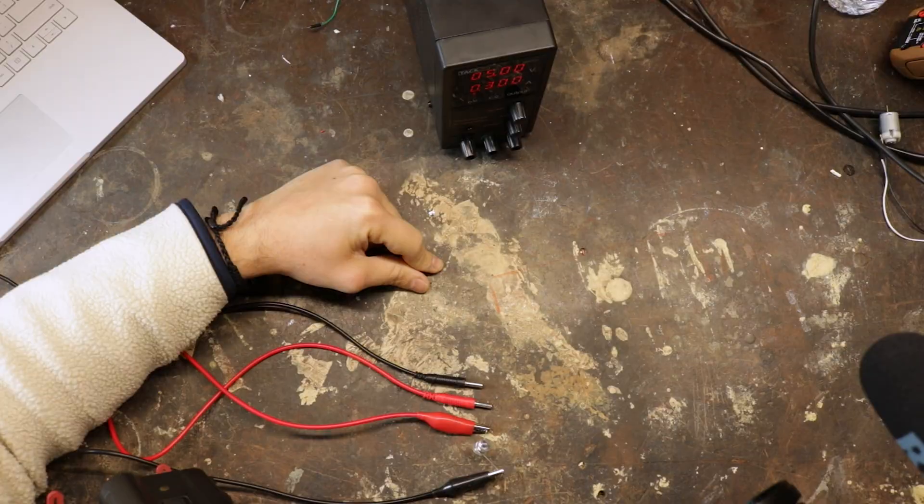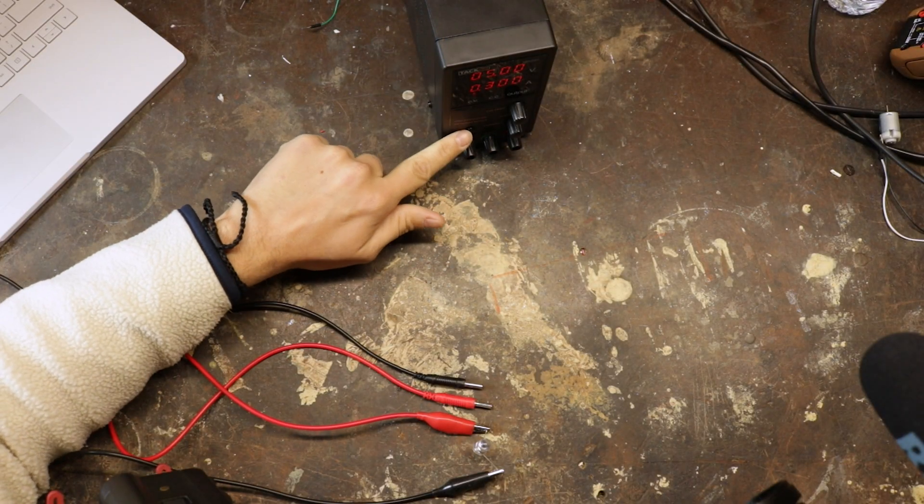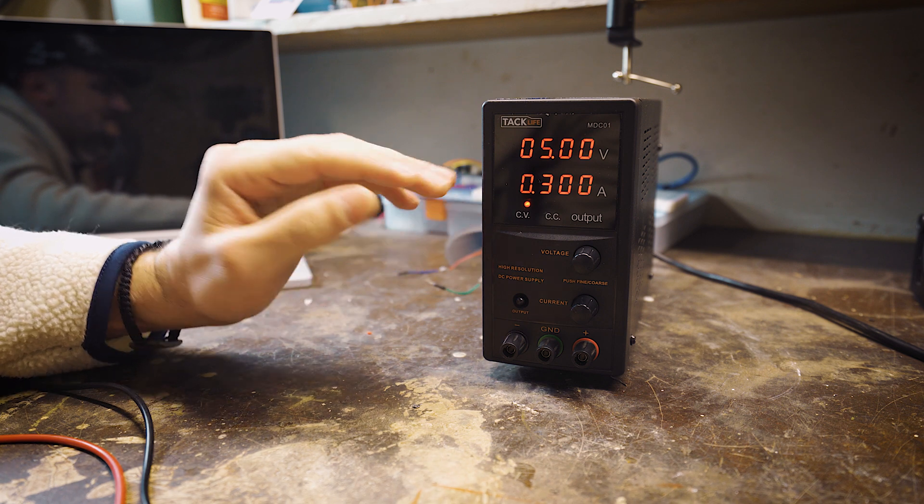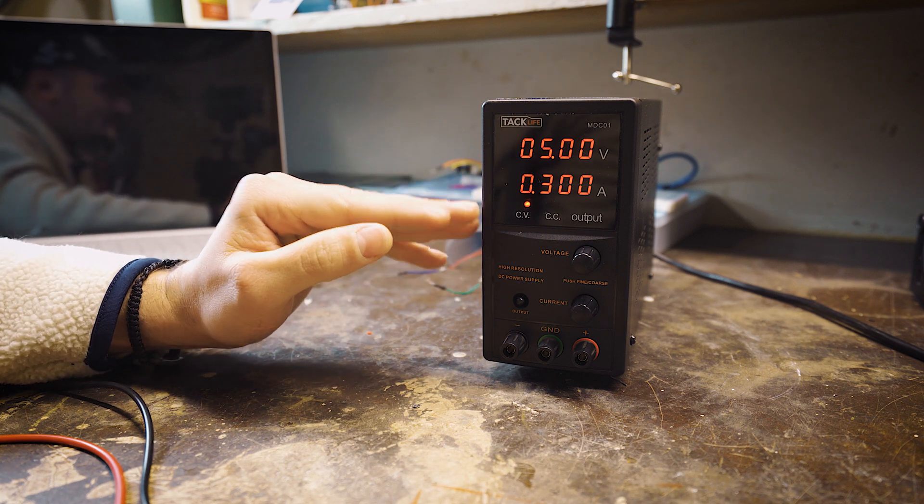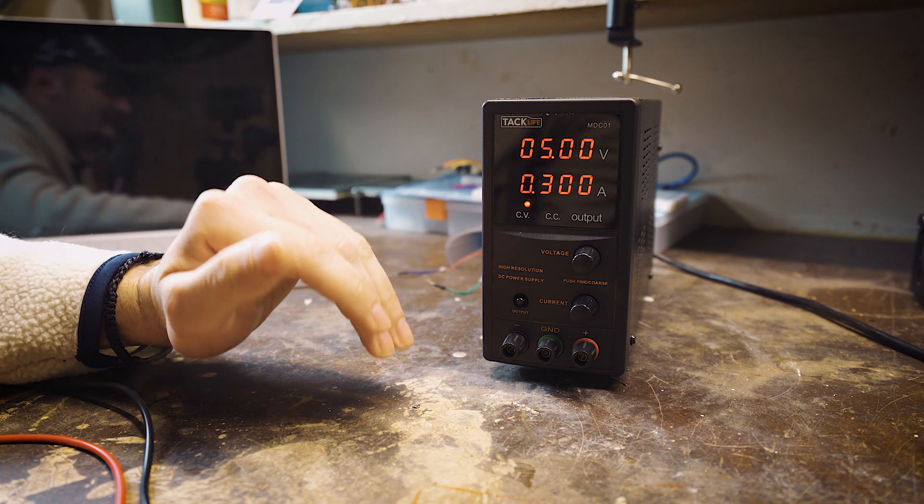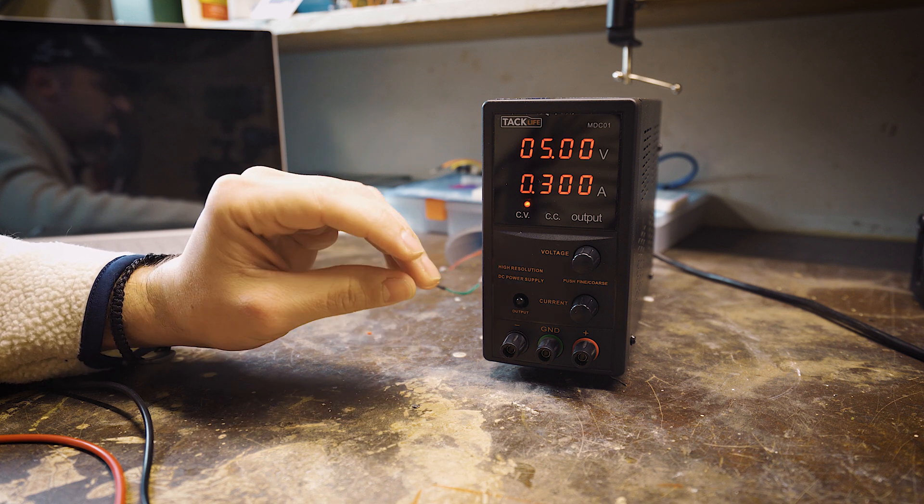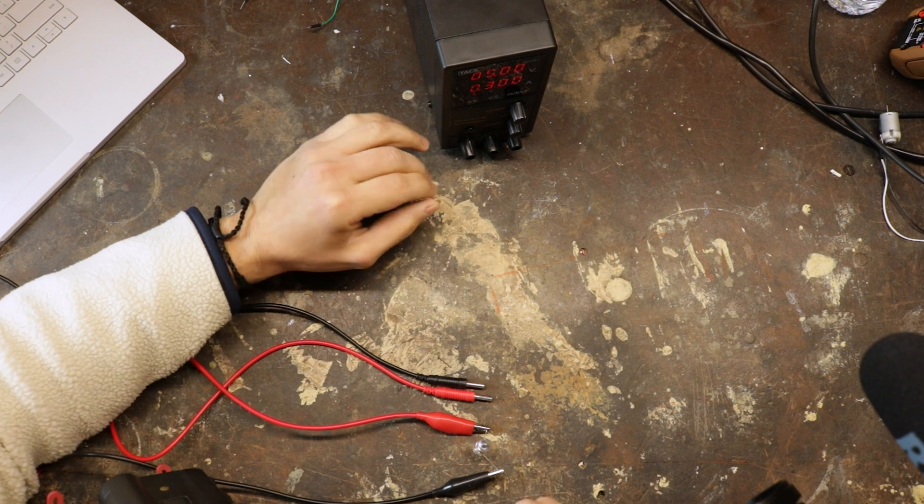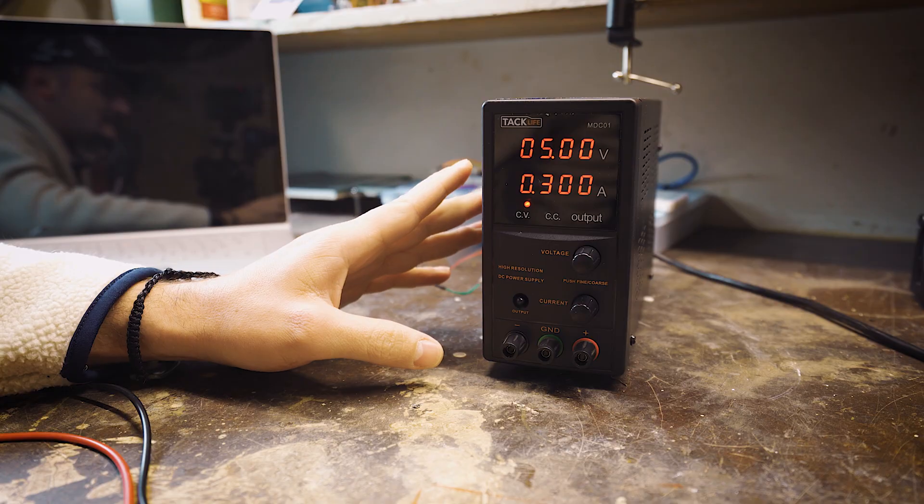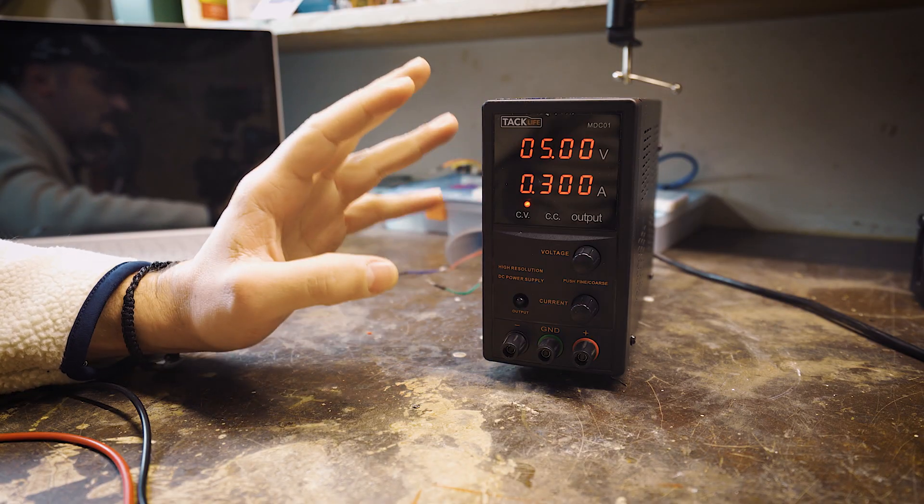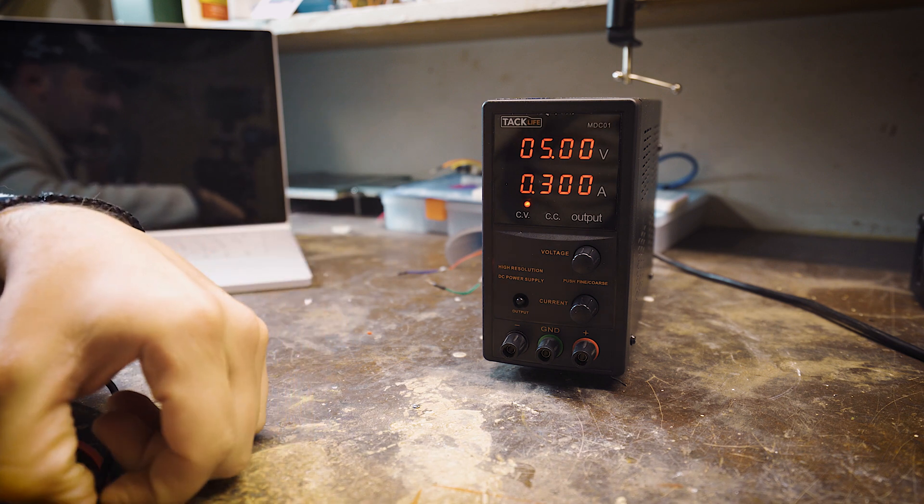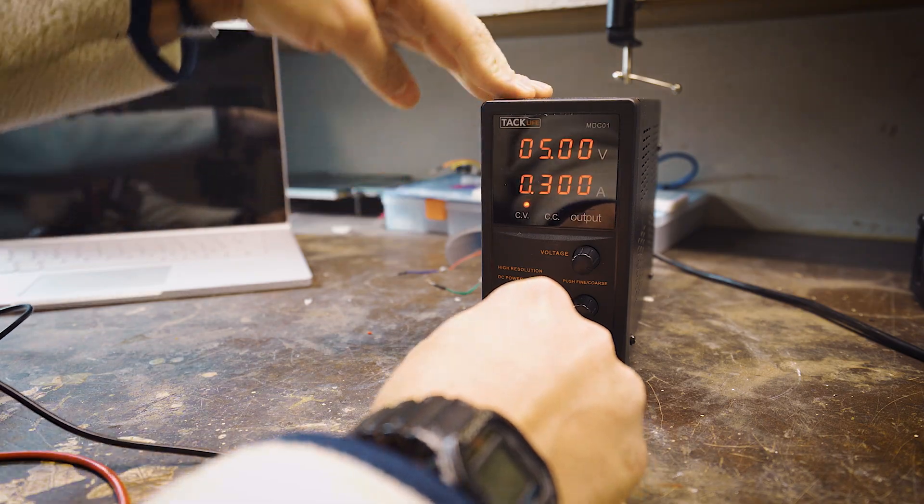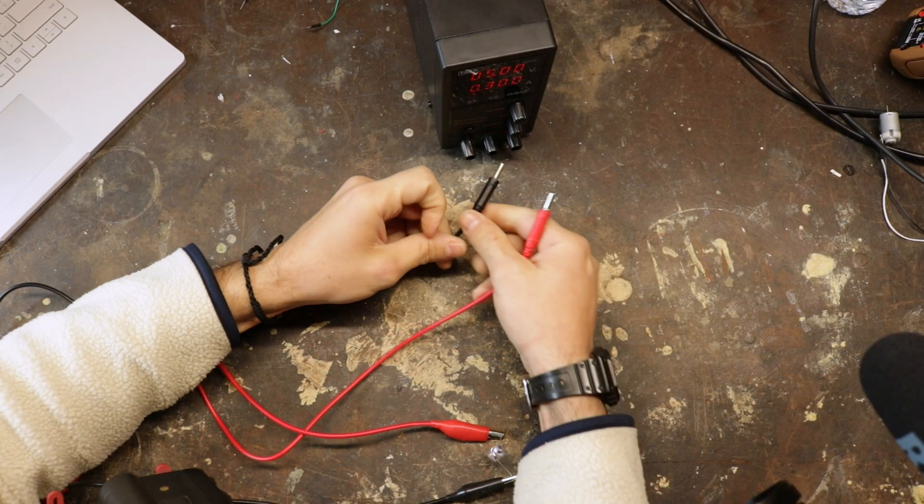Another thing I want to point out here is this output button. This output button allows you to set your settings on the DC power supply without actually outputting any current or voltage to the thing that you're trying to supply to, the thing you're trying to power. This is actually not a standard feature in every single DC power supply, so I do highly recommend that if you have the option to get one, definitely get one that has an output button.